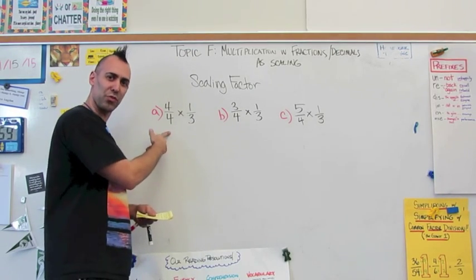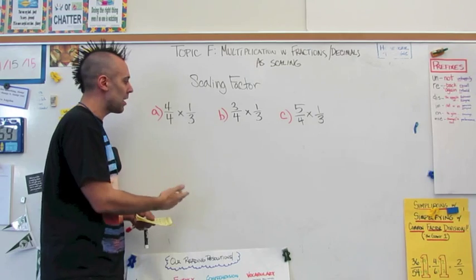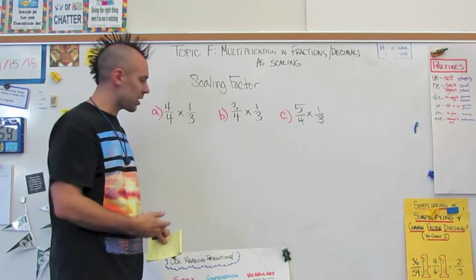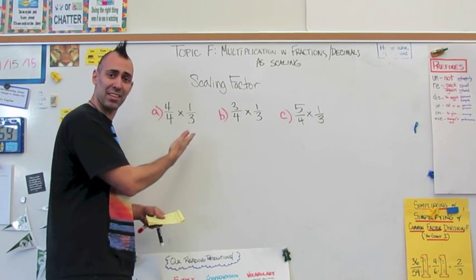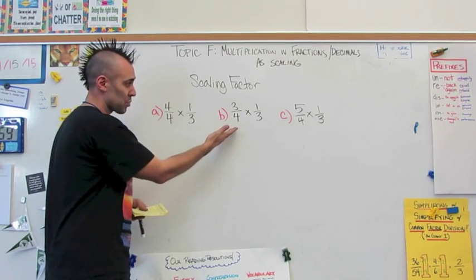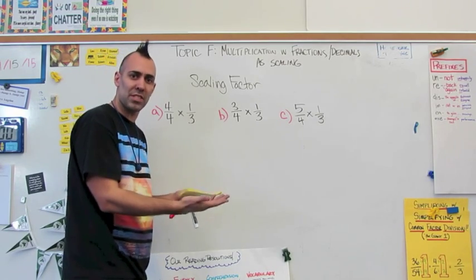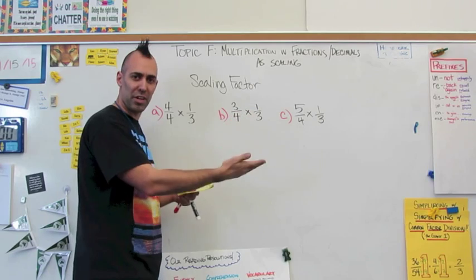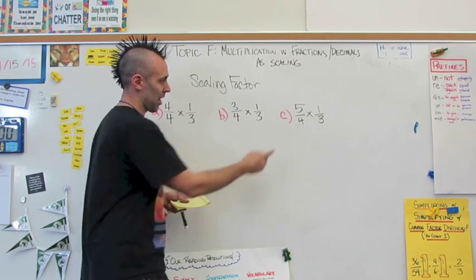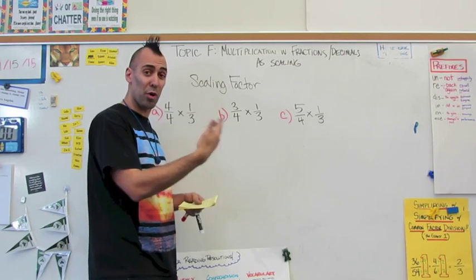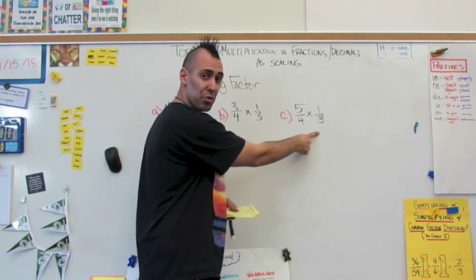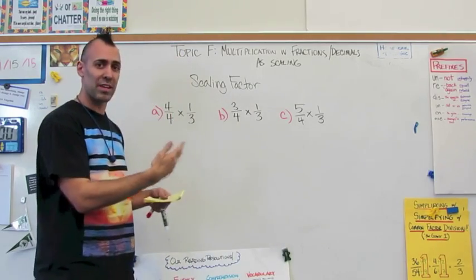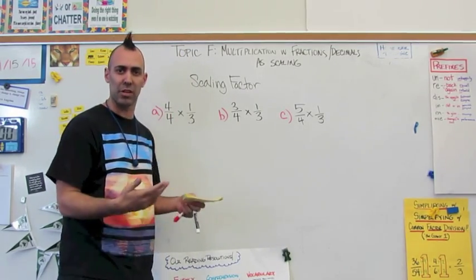For example, four-fourths times one-third: they'll know immediately that four over four is equivalent to one, so this is going to be exactly one-third. Three-fourths is a little bit less than one, so a little less than one times one-third means the product will be less than one-third. And five-fourths, a little bit more than one, means this value will be a little bit more than one-third. They can determine that just by looking at these without doing any calculation.